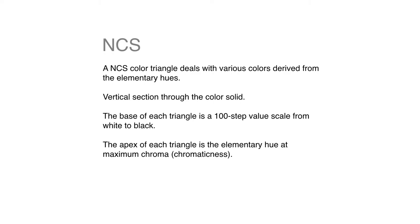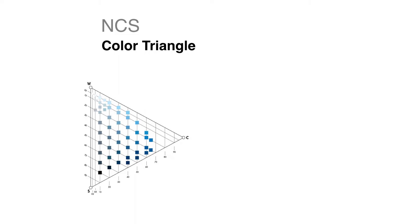A color triangle is a kind of a subset. It examines one color family that's derived from an elementary hue blend. It is considered a vertical section through the color solid.